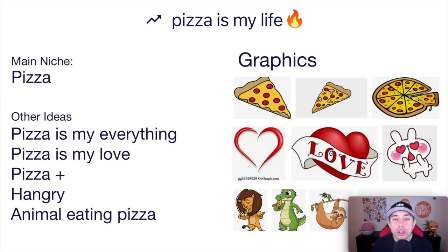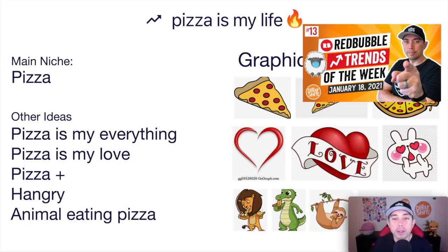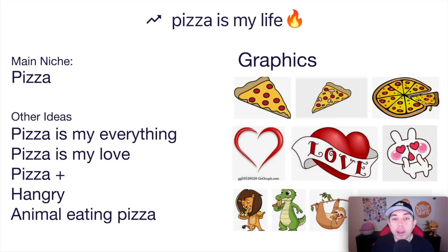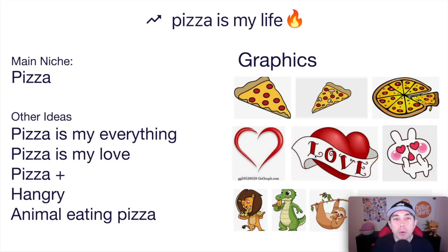The first thing I want to show you is the idea board. This one is for Pizza Is My Life, from the video I did yesterday — I'll put a link up top. What I do is brainstorm and go on Google to look for different graphics that relate to the topic. Pizza is my life — what do I think about? Pizza, a heart, someone eating pizza. One idea I have is a pizza slice, a pepperoni slice, with a banner that says 'pizza is my life.' I'm going to check Redbubble now to see if anyone has already done that.